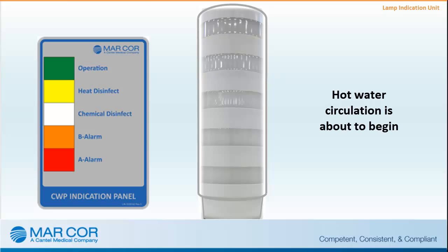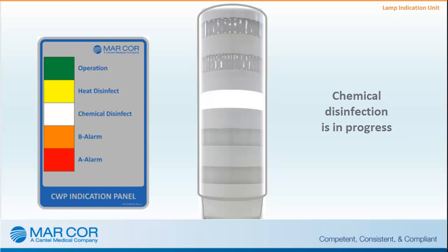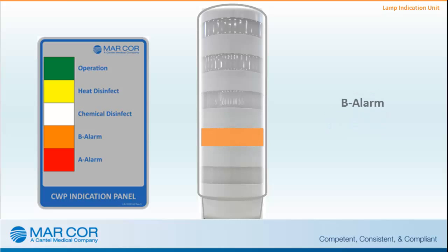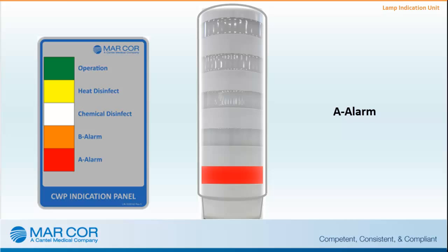A blinking yellow light is a warning that hot water disinfection is about to occur. A steady white light indicates a chemical disinfection is in progress. A blinking white light indicates that chemical disinfection is finished but the residual test has not yet been performed and verified by entering the operator's code. A blinking orange light notifies the operator that an alarm type B has occurred — the RO will not stop water production. A steady orange light indicates the B alarm has been acknowledged but the cause still remains; an example of a B alarm is battery-low PLC. A blinking red light indicates an alarm type A has occurred — the RO will stop water production. A steady red light means the A alarm has been acknowledged but the cause still remains; an example of an A alarm is high conductivity.